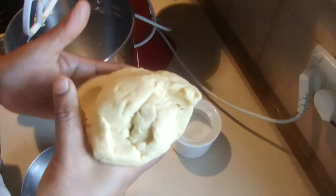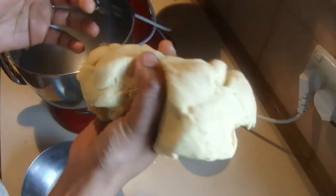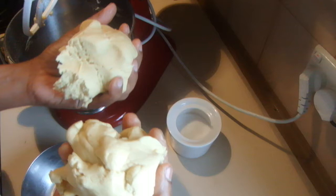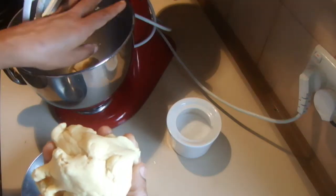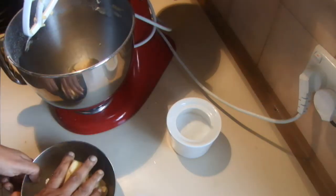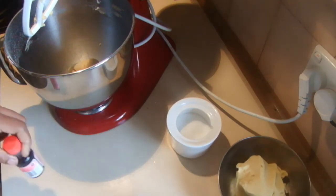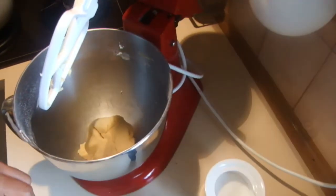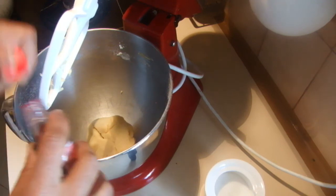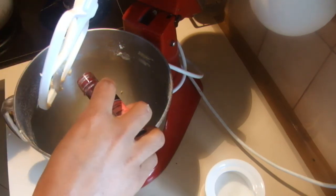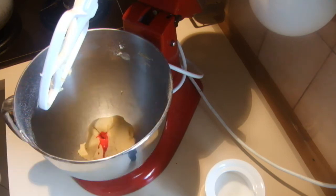After mixing, take the dough and divide it into two equal parts. Put one part in the mixing bowl and the other in another bowl. Into one half, add a drop of whatever color you like. I'm adding red food coloring, so mix it really well.